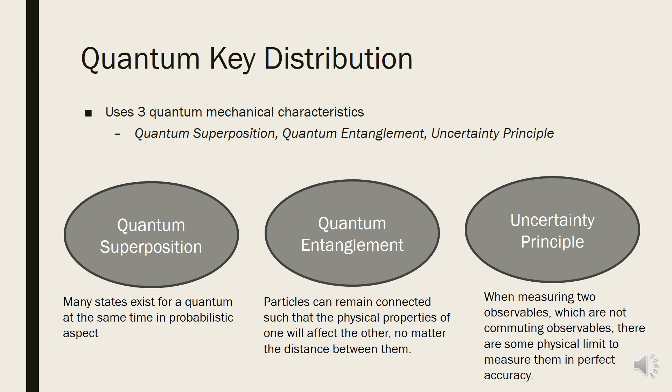Finally, uncertainty principle is the principle that when measuring two observables which are not commuting, there are some physical limits to measure them in perfect accuracy. This principle is significant in quantum cryptography because we can prove that quantum is impossible to copy. When we try to measure the state of the quantum, the error is amplified, so it is impossible to copy quantum.